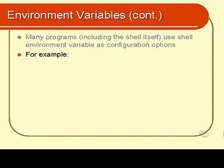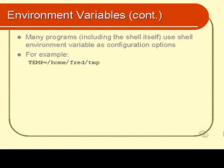For example, if you had an environment variable called TEMP and its value was set to be the directory /home/fred/tmp, then that might possibly be the directory that various programs use to store temporary files. Adjusting the environment variable would cause the temporary files to be stored in a different directory.